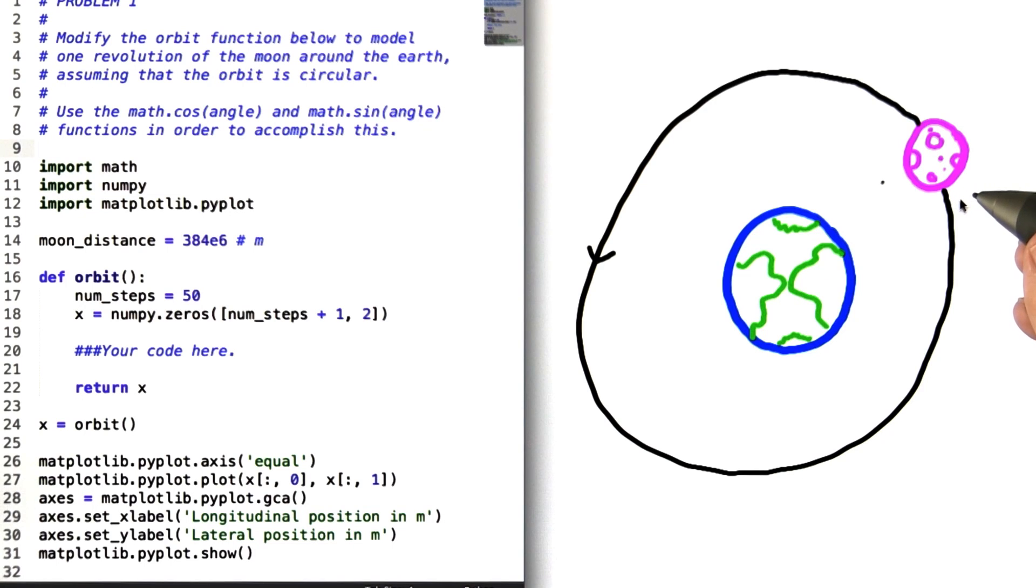In this problem set, we want you to create a function that models the orbit of the moon around the earth. We're going to assume in this case that the moon's orbit is perfectly circular, which means that we can model it using just sine and cosine functions. This assignment should then help you practice translating simple mathematical ideas into expressions in Python.